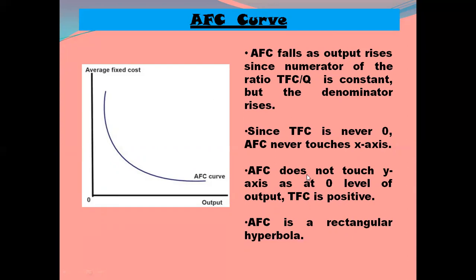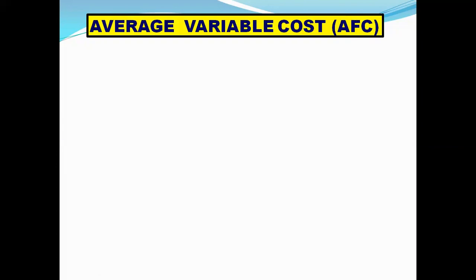AFC will not touch the x-axis or the y-axis. AFC is a rectangular hyperbola, so the shape of the AFC curve is a rectangular hyperbola. Now we come to average variable cost.